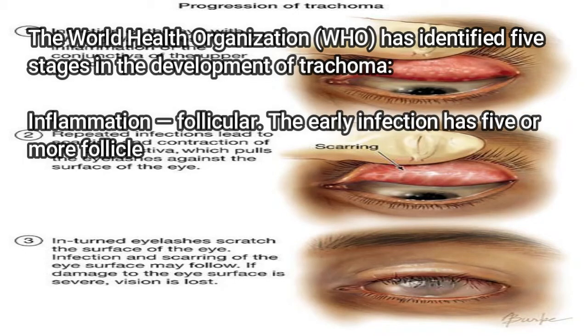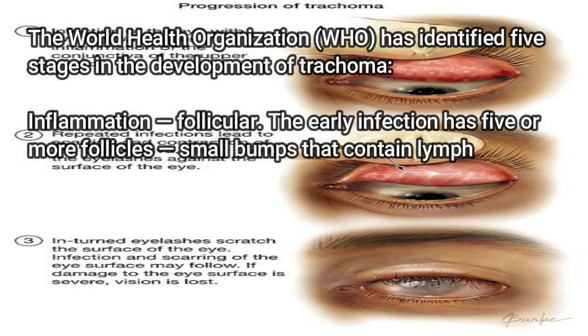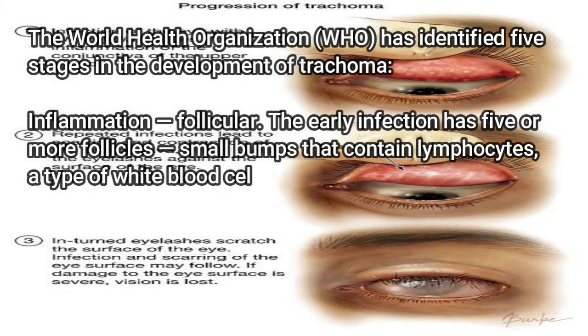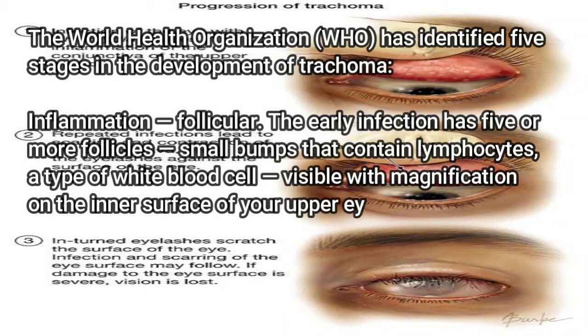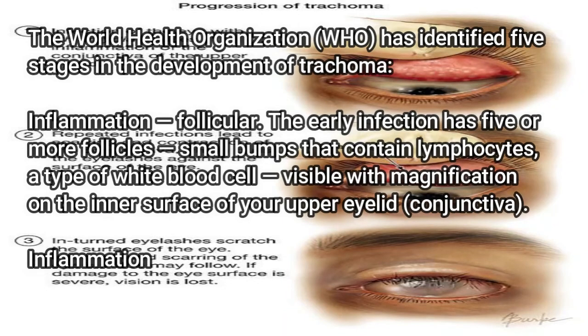The World Health Organization (WHO) has identified five stages in the development of trachoma. Stage one — inflammation follicular: the early infection has five or more follicles, small bumps that contain lymphocytes, a type of white blood cell, visible with magnification on the inner surface of the upper eyelid conjunctiva.